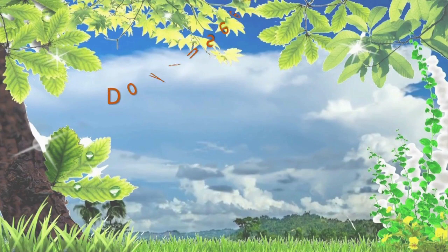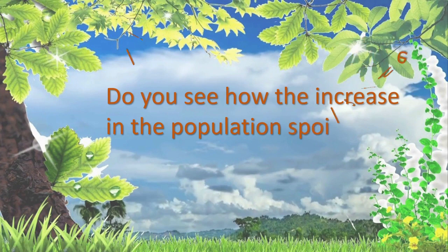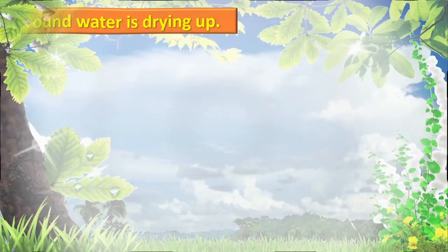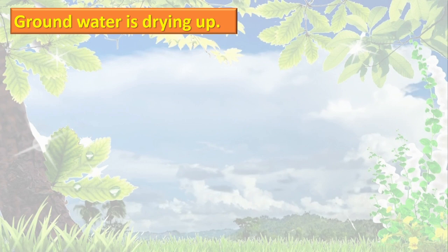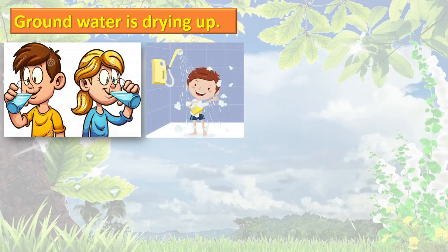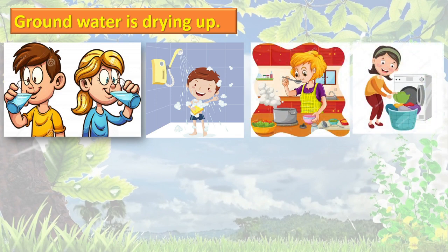Do you see how the increase in population spoils the life we lead in cities? It creates so many problems. First one: groundwater is drying up. Dear children, water is an important need of all living things. We use water for drinking, for becoming clean, for cooking, for washing clothes and utensils.